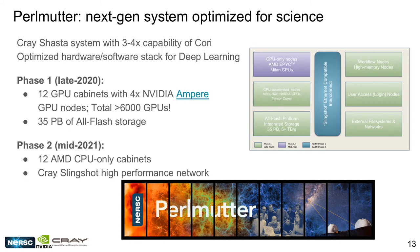One example system coming online soon at NERSC is Perlmutter — our next generation system optimized for science and one of the early Cray Shasta systems. It will have a few times the capability of our current system, Cori, with an optimized hardware and software stack for deep learning. Perlmutter comes in two phases: the first, late this year, will have NVIDIA A100 Ampere GPUs and a single-tier all-flash storage system. Phase two in mid-2021 adds a Cray Slingshot high-performance network. We are very excited about its capabilities for deep learning.